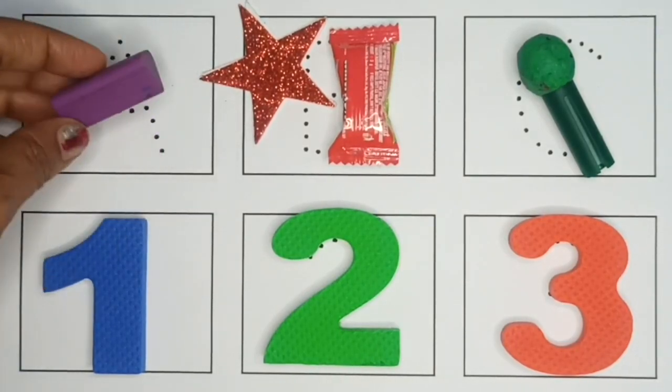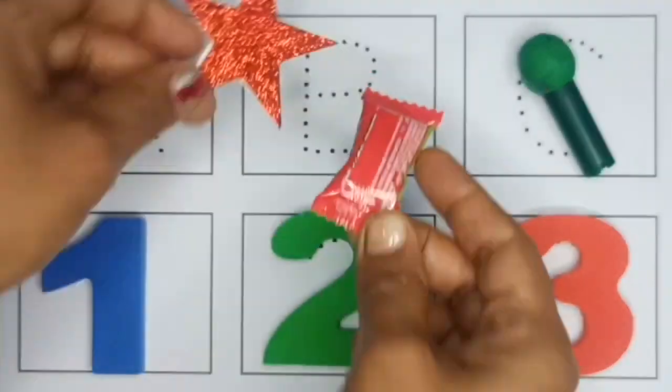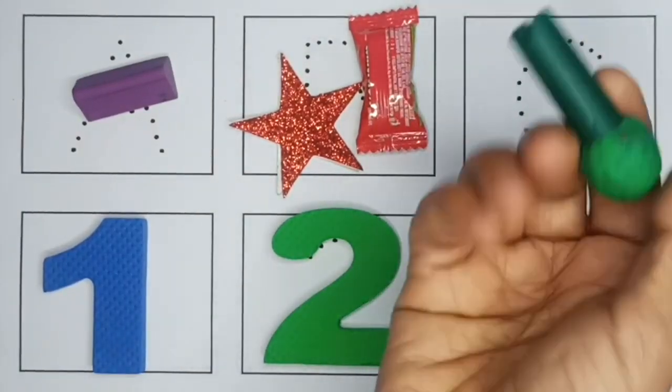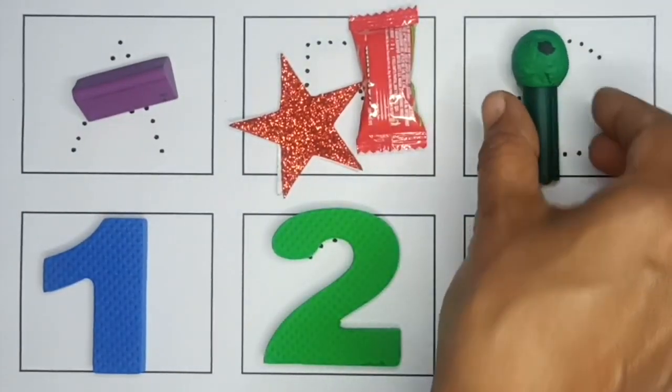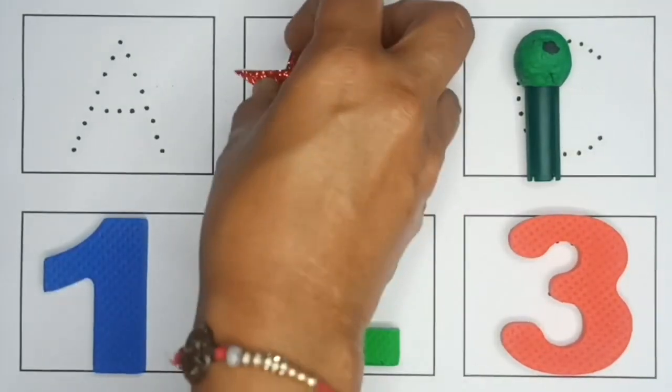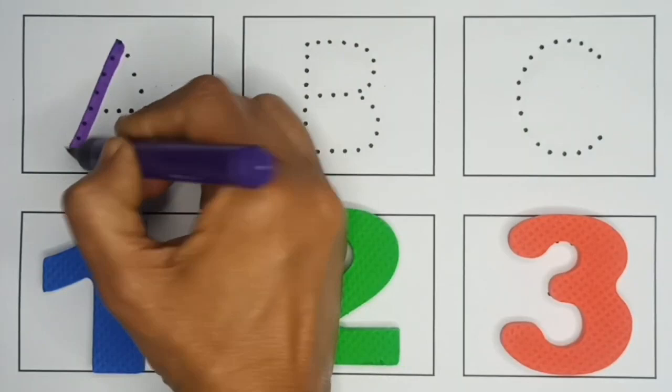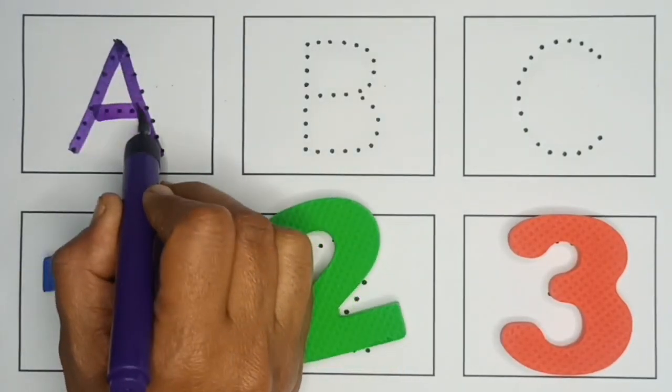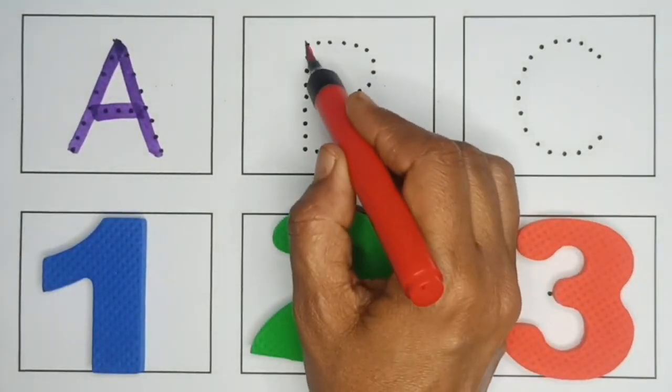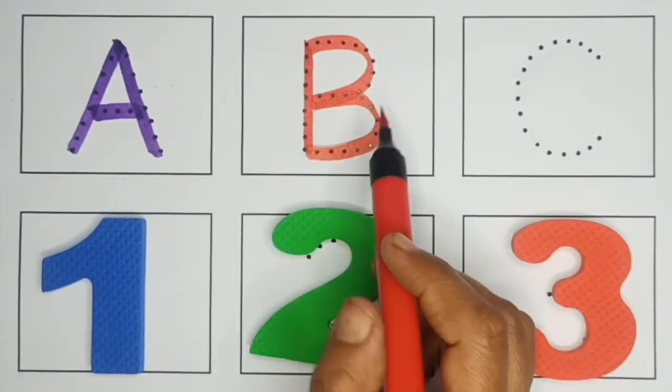Violet color. Red color. Red. Green color. Green. Green color. Violet color. Red color. Green color. A. A for apple. Violet color. B. B for ball. Red color.